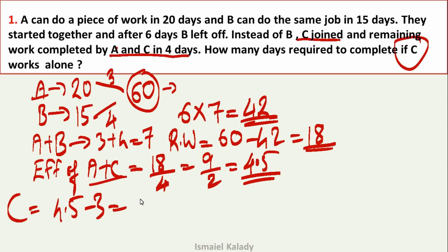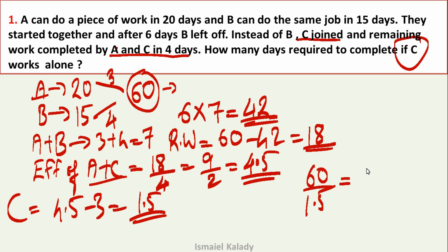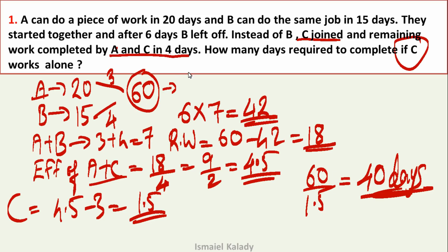C's efficiency is 1.5. Total work divided by C's efficiency: 60 divided by 1.5 equals 40 days. The right answer for this question is 40 days.